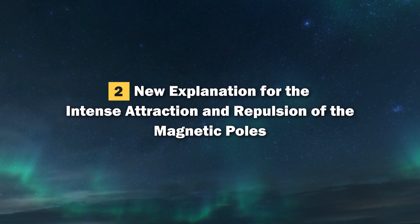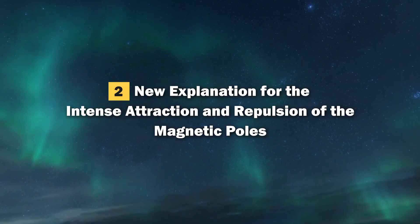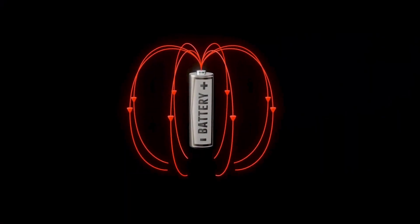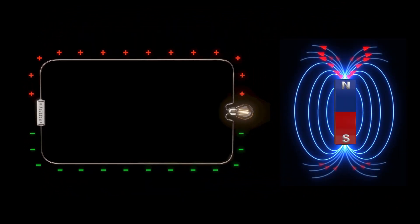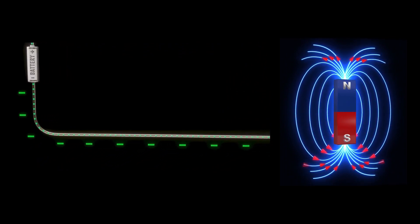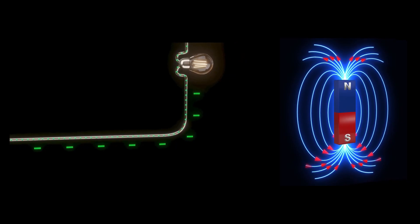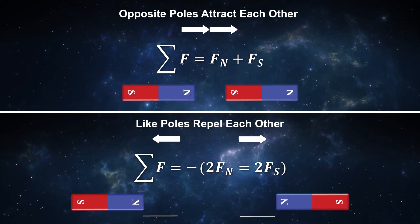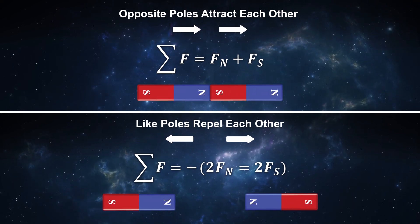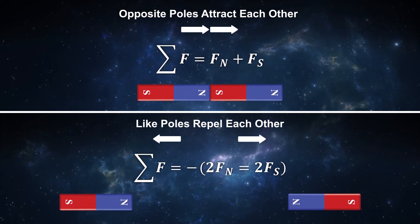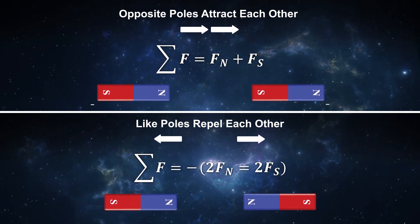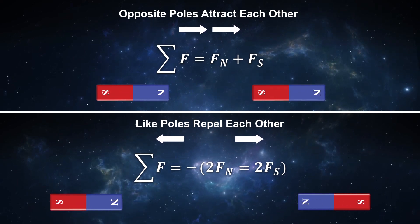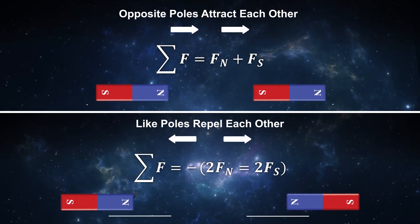New explanation for the intense attraction and repulsion of the magnetic poles: just as in electricity, electrons transfer from higher potential points to lower potential points, in magnetic fields, magnetic fluxes move from the N pole (higher potential) to the S pole. If magnetic poles are opposite, they will attract each other intensely; if the poles are alike, they repel each other intensely. Like poles repel each other with a force equal to the sum of the two values of those forces, and opposite poles attract each other with a force equal to the sum of the two values of those forces.